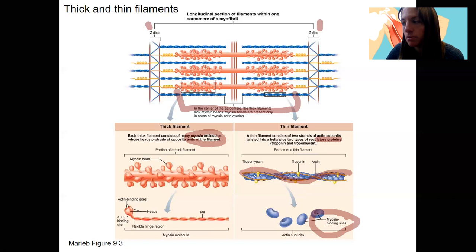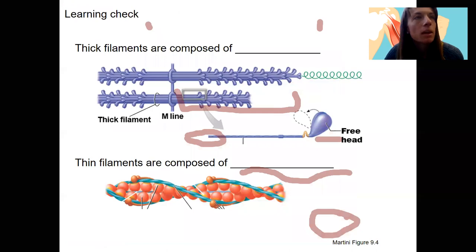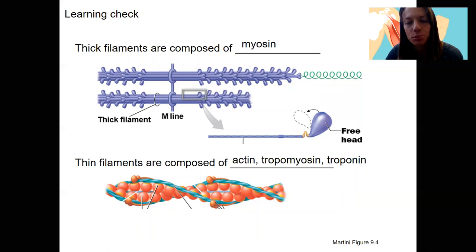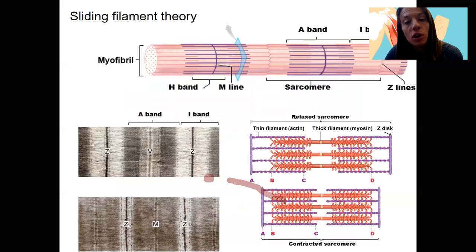Quick learning check: thick filaments are made of myosin, and thin filaments are made of actin, tropomyosin — shown in green — and troponin in brownish. All this information is going to be important when we get to contraction.